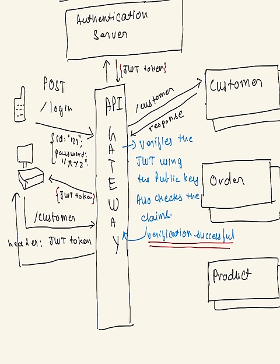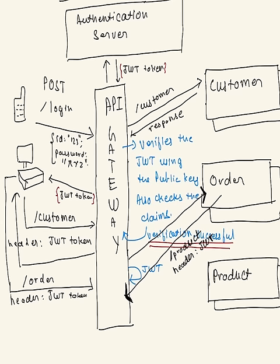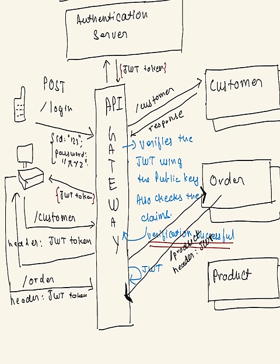If we want to call another service which in turn calls another service, the request will again first be verified at the API gateway level using the public key. The API gateway then calls the URL of the other microservice — for example, the product service — the signature is verified, the product service is called, and after collating the responses of the order and product services, the response is eventually returned to the end client. This is how authentication happens using public and private keys in a microservices environment.